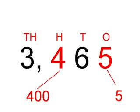Now to a second number: 3,465. We will be working on the place value of the 4 and the 5. The 4 represents 400 in the hundreds column, and the 5 represents 5 in the ones column.